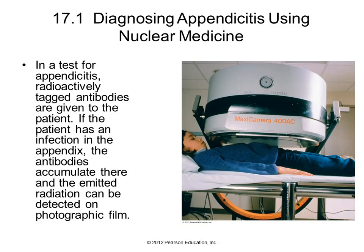So this is an illustration of diagnosing appendicitis. They can give you some antibodies that have radioactive tags on them, and if you've got an infection in your appendix, your appendix collects stuff, and so the antibodies will accumulate there. Using this fancy machine, they can take a picture of you and see the radioactivity clustered in your appendix, and that is a really clear indication that you've got an infection in your appendix. If you don't, then it won't accumulate there.